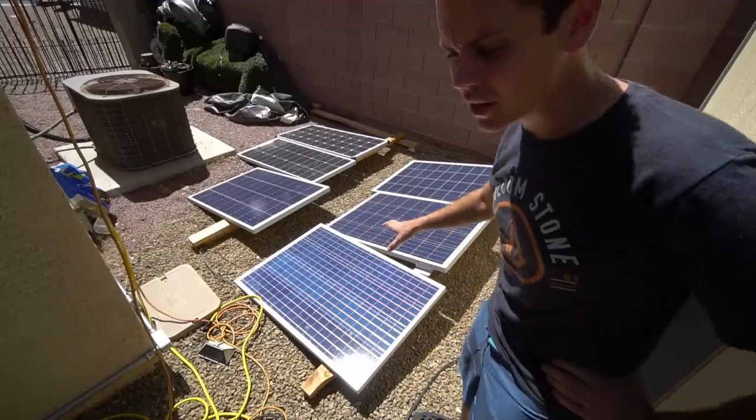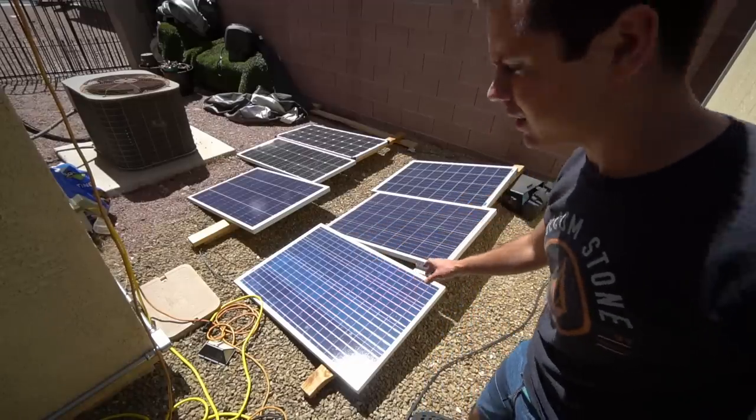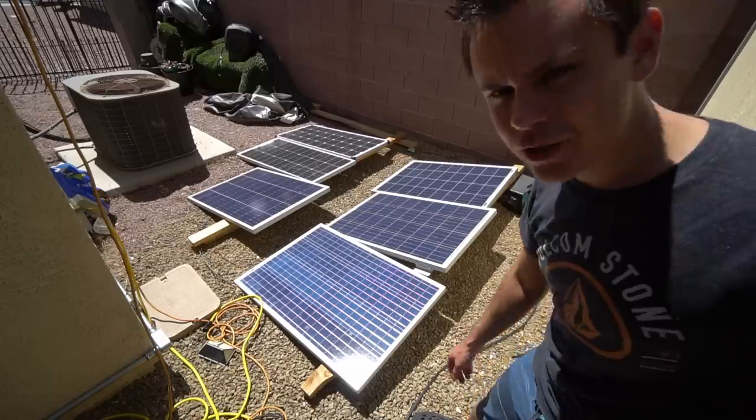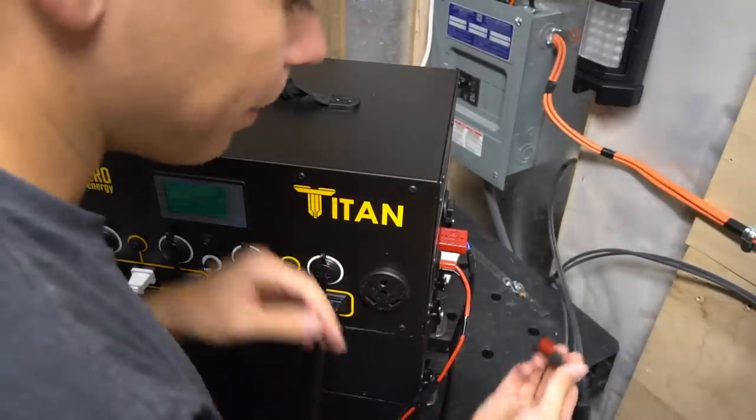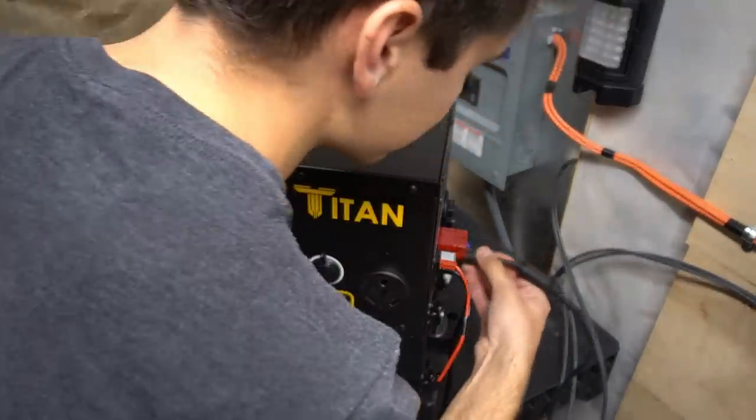And this is the solar array that is currently connected to the Titan. It's 600 watts with 110 volts. And it works really well. And I connected the new solar panel to this Anderson connector and we're just going to plug it in.